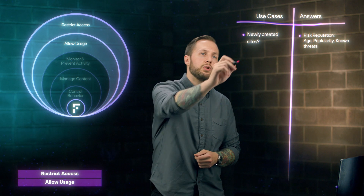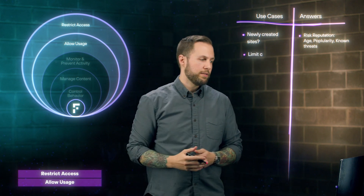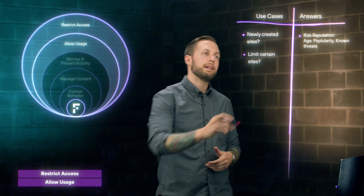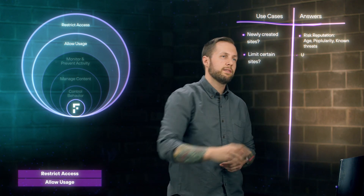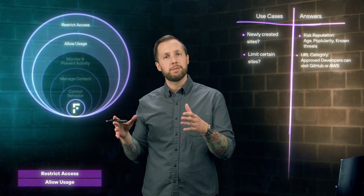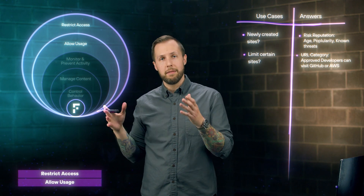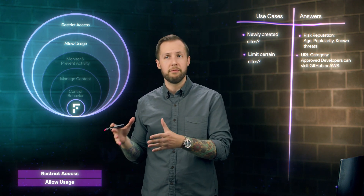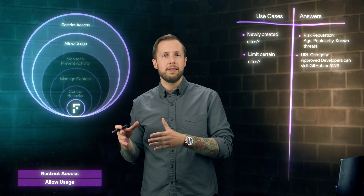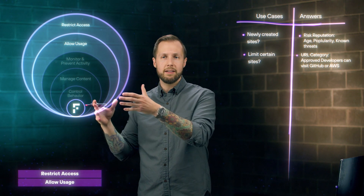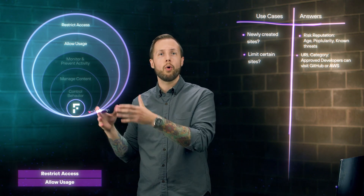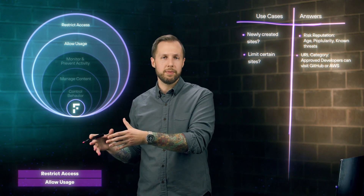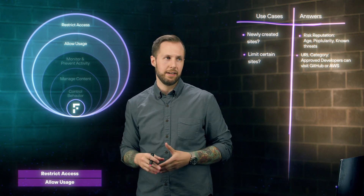Secondly is URL categories. That's going to give us the ability to limit certain websites. URL categories pretty much just put websites in a bucket, like computer and internet information, and then we can decide to either block or allow that entire group of websites to be accessed.